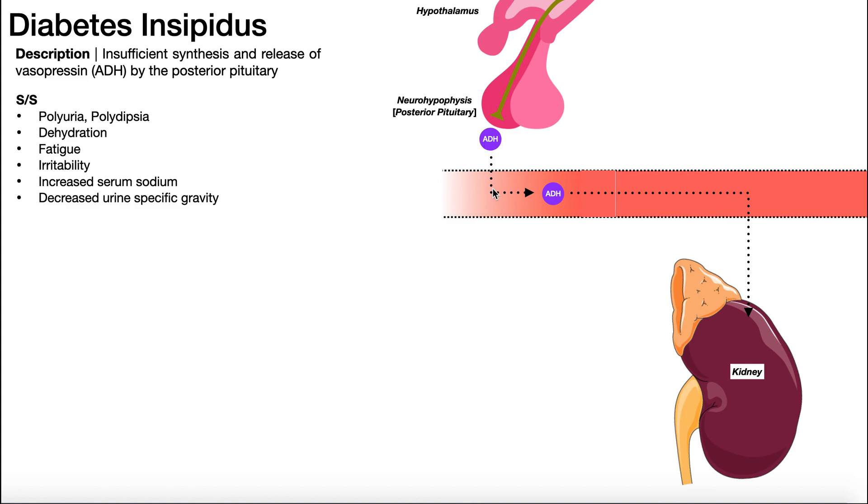ADH is going to travel in the blood. It's a hormone, and it's going to go to the kidneys right here. Let's think about the name antidiuretic hormone. It's antidiuresis. So what is diuresis? Diuresis is urination. So if we're antidiuresis or antidiuretic, that means it's going to function in slowing down or stopping urination so that we can hold on to water.